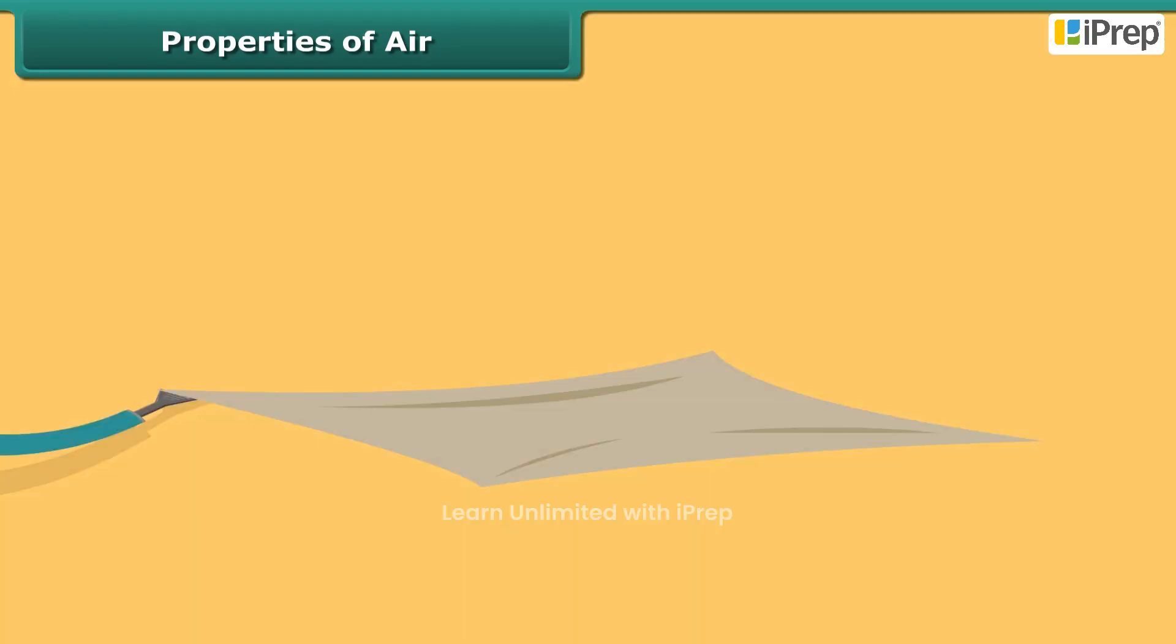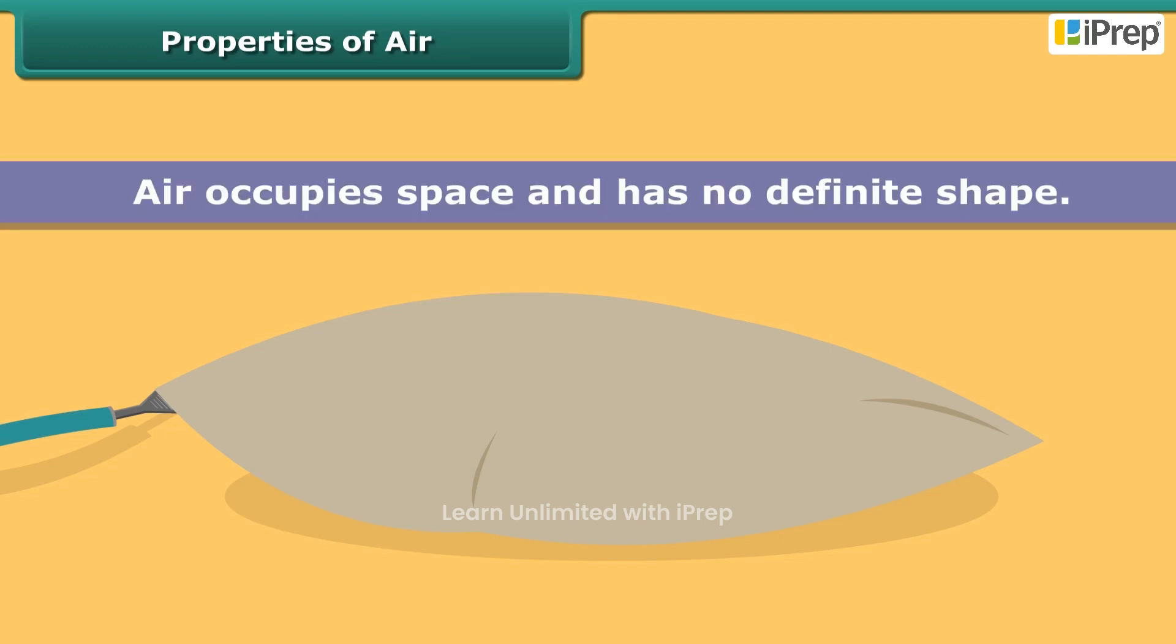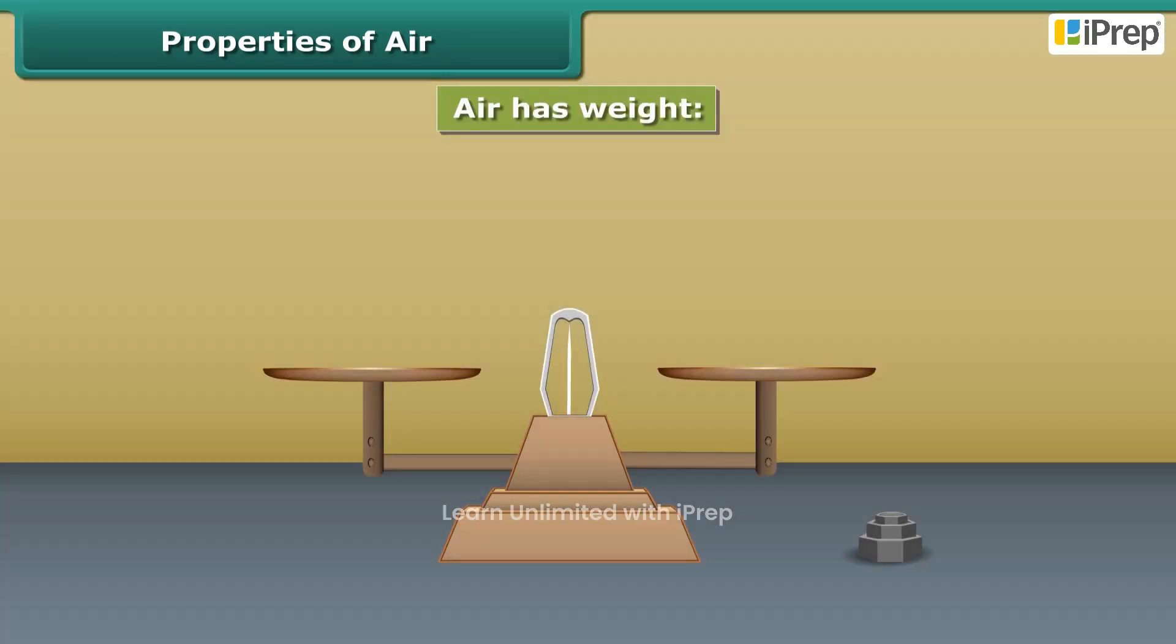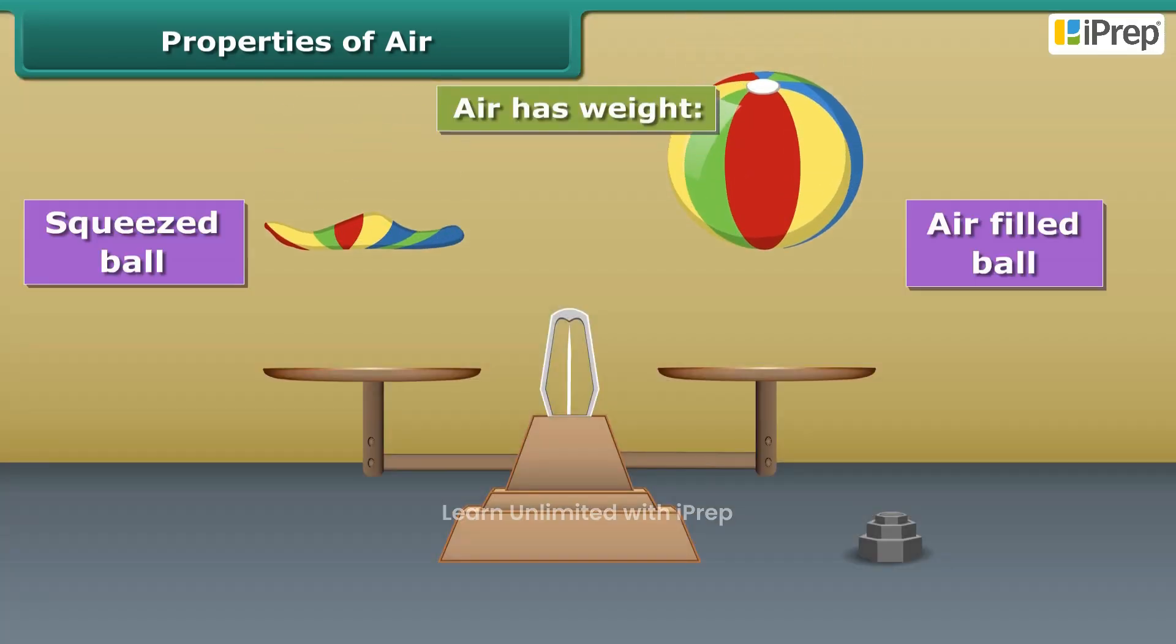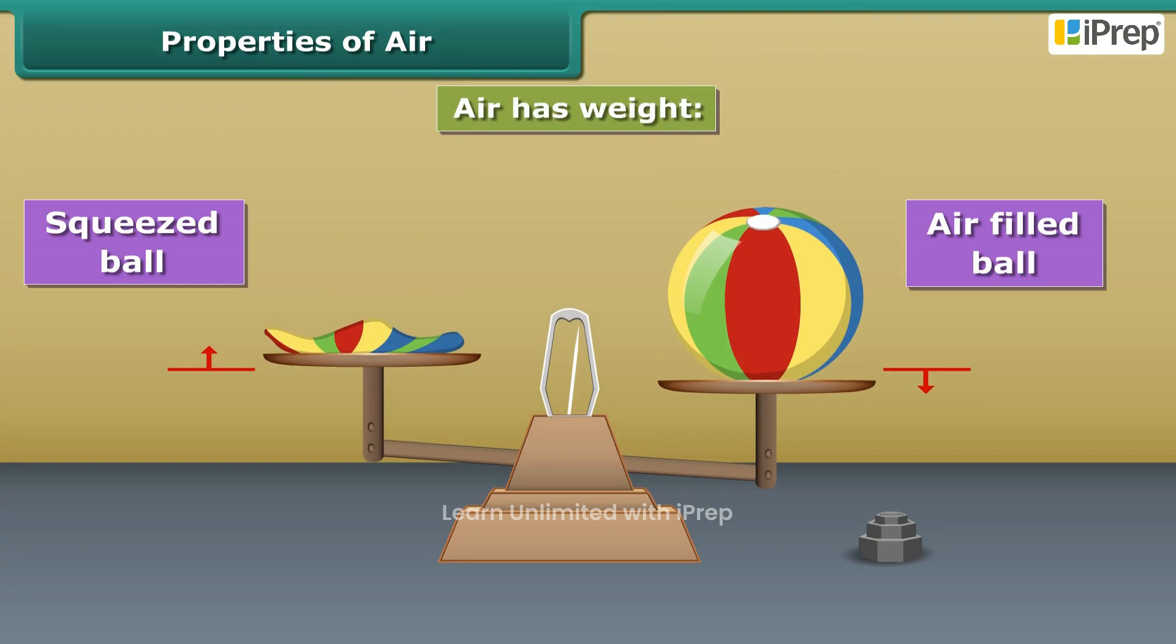Inflate an air pillow. What do you see? It grows in size. This shows that air occupies space and has no definite shape. Air has weight as well. Put the air-filled ball on one side of a balance and a similar empty and squeezed ball on the other side.